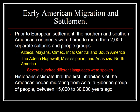Early American migration and settlement: prior to European settlement — predominantly the Dutch, French, English, and Spanish — the northern and southern American continents were home to more than 2,000 separate cultures and people groups. We're looking at the Aztecs, the Mayas, the Olmec. You also have the Inca, located more in South America in Peru. In North America you have the Adena, the Hopewell, the Mississippian, and the Anasazi. Several hundred different languages were spoken — the book said about 400 — and each had their own religious practices and political institutions.